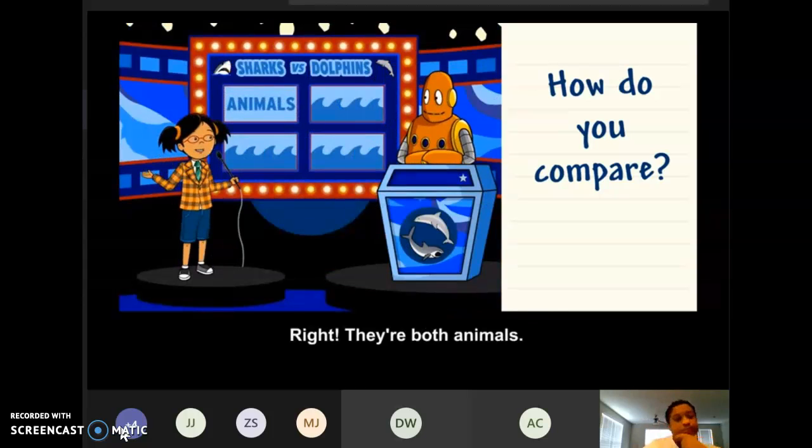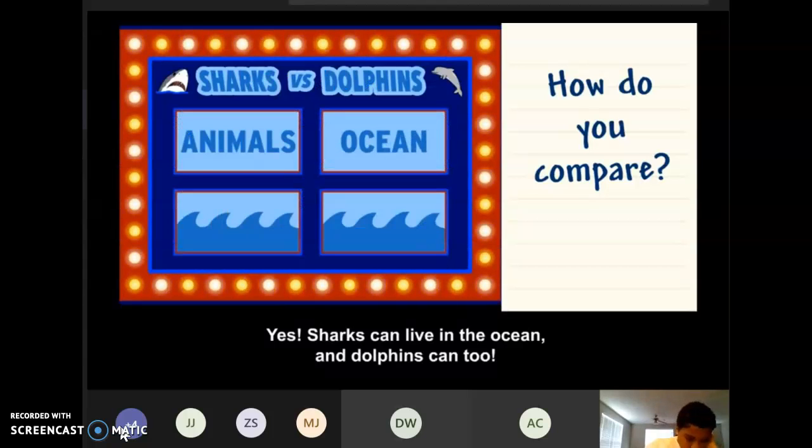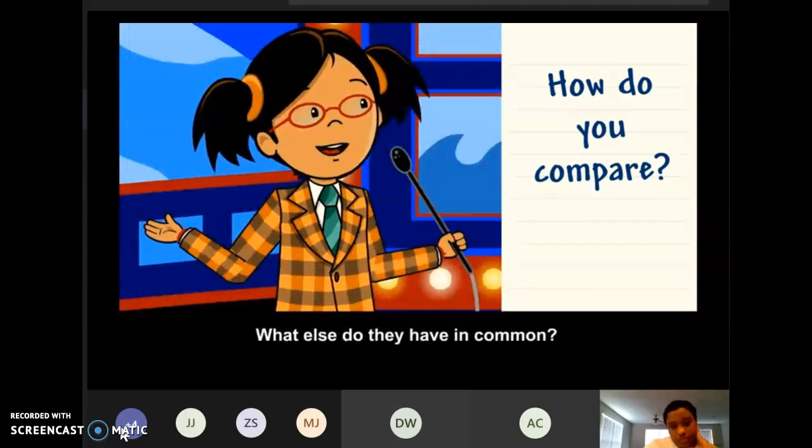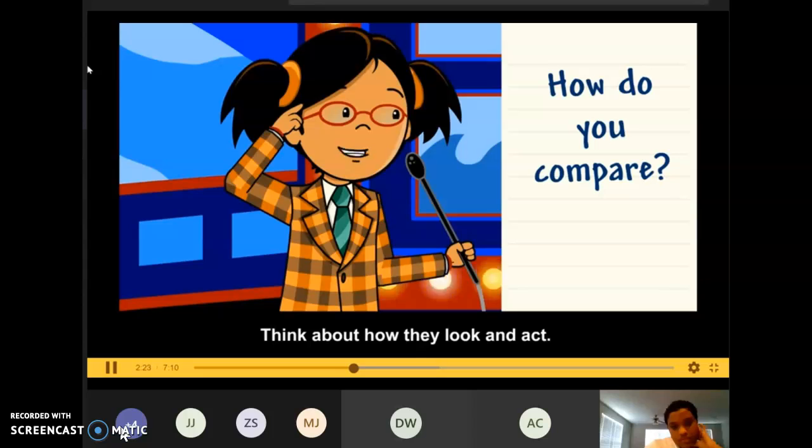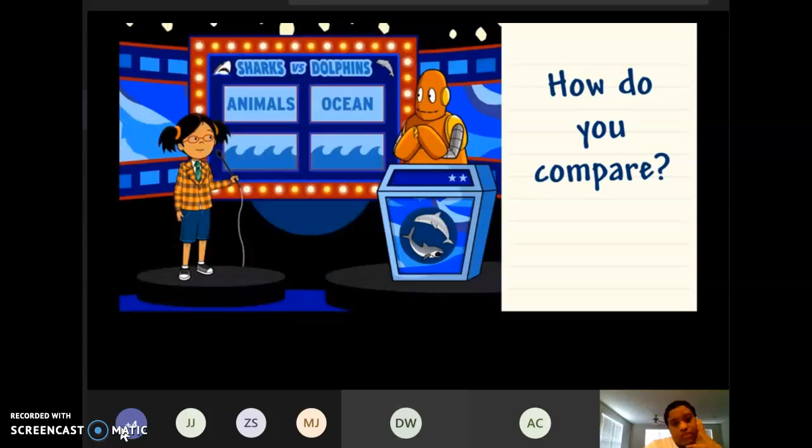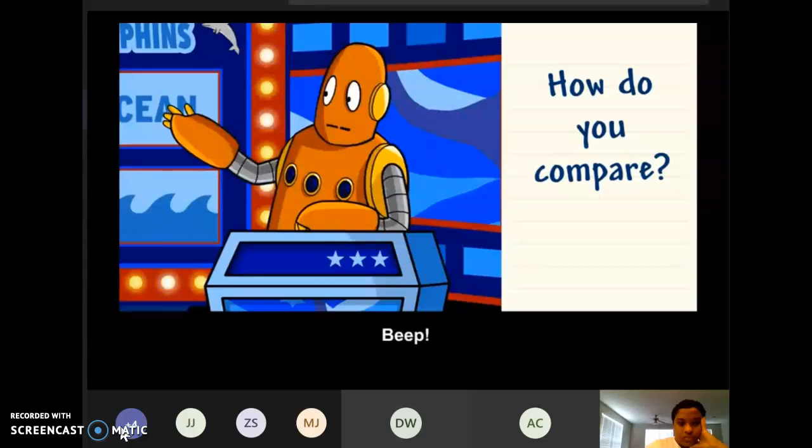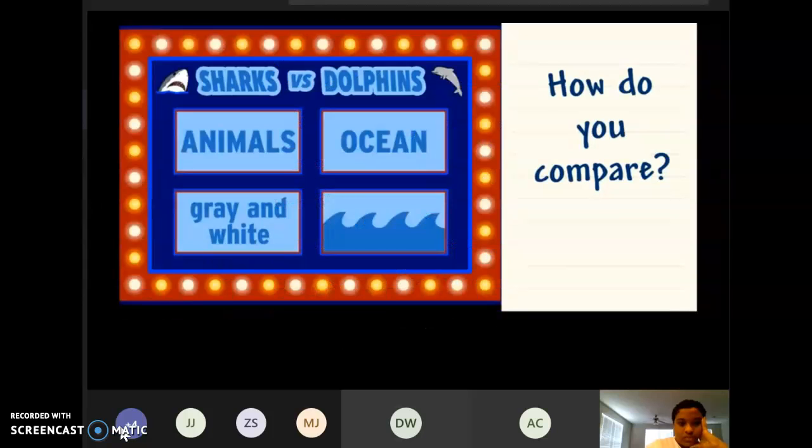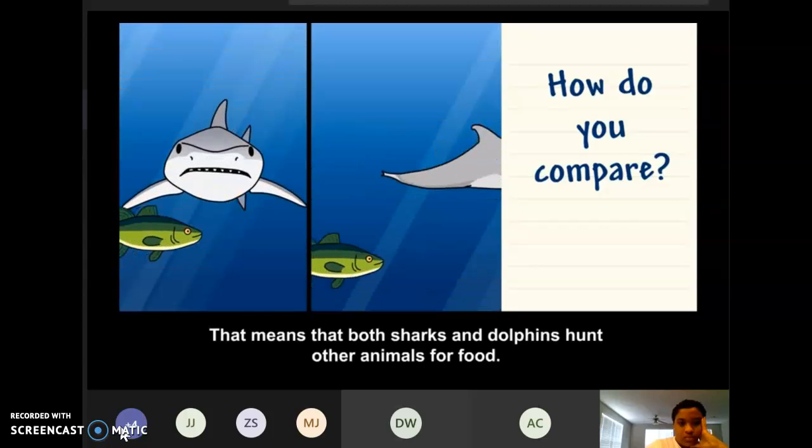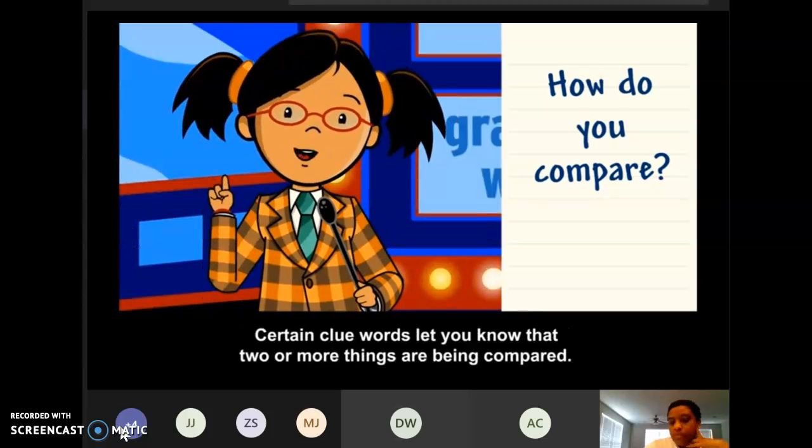How are sharks and dolphins alike? Right. They're both animals. Yes. Sharks can live in the ocean, and dolphins can too. What else do they have in common? Think about how they look and act. Both animals can be grey and white. Yep. They're predators. That means both sharks and dolphins hunt other animals for food.